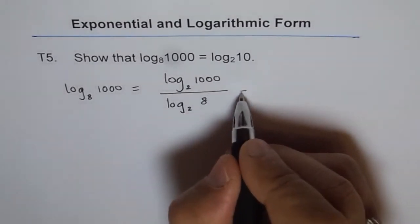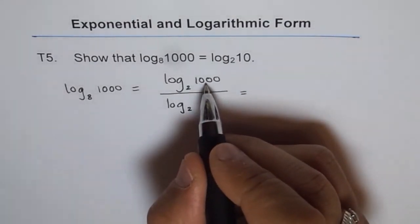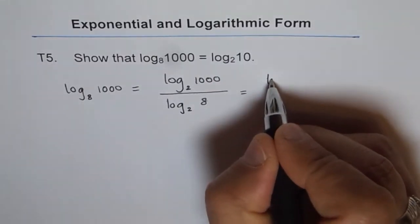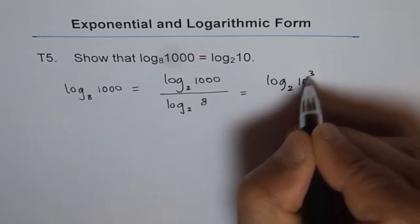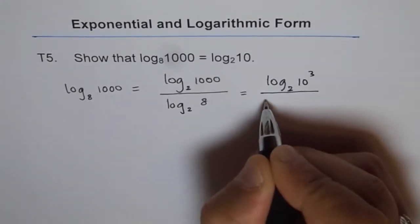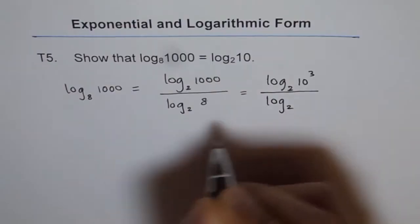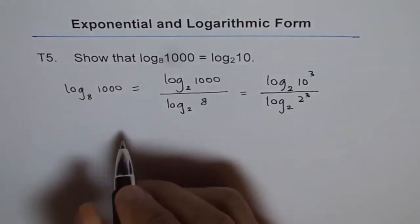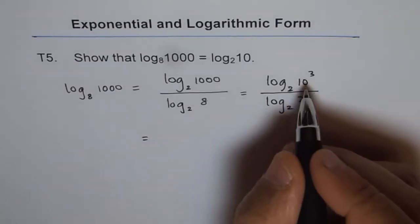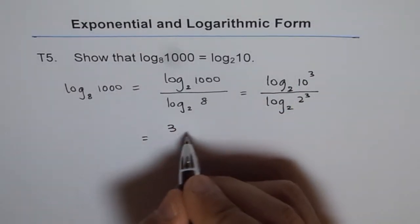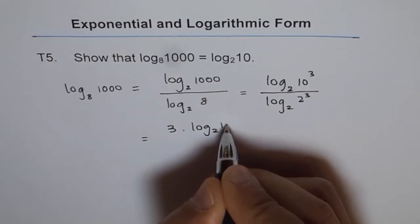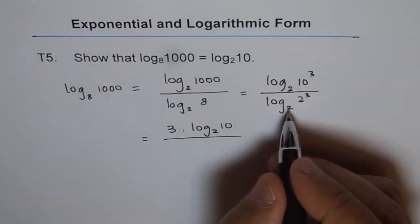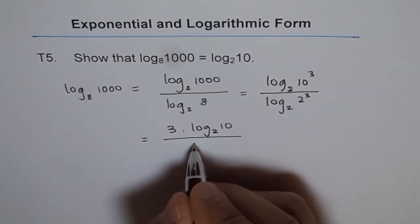Now, 1000 can be written as 10 to the power of 3. So it's log to the base 2 of 10³ divided by log to the base 2 of 8, which is 2³. This can be simplified as 3 times log to the base 2 of 10, divided by 3 times log to the base 2 of 2, which is 1, so it's over 3.